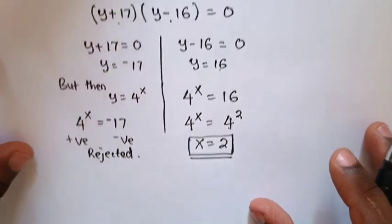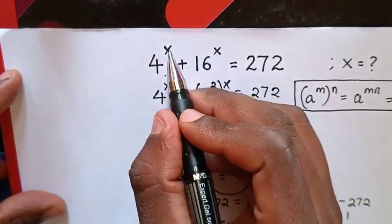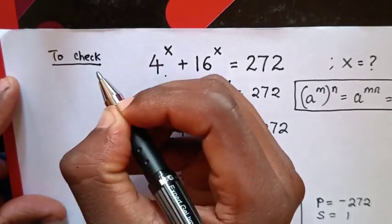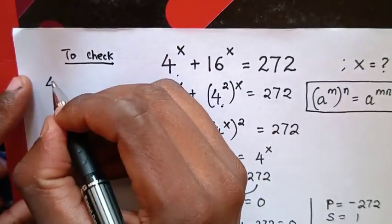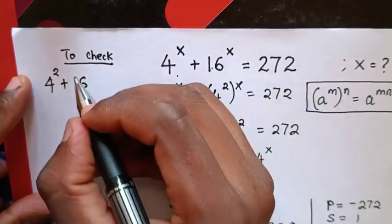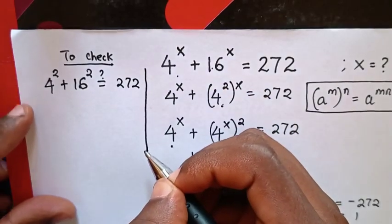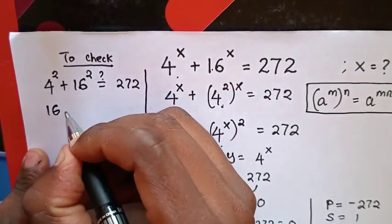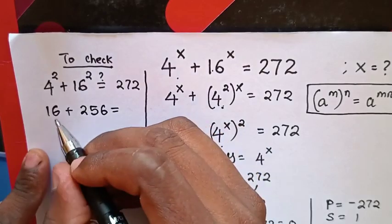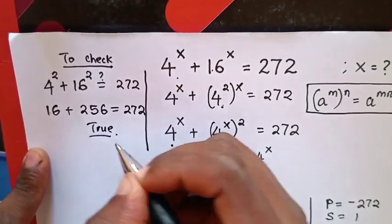To check if our answer is correct, we substitute x equals 2 into the original equation: 4 power 2 plus 16 power 2. That gives 16 plus 256, and the sum is 272. This confirms that x equals 2 is correct.